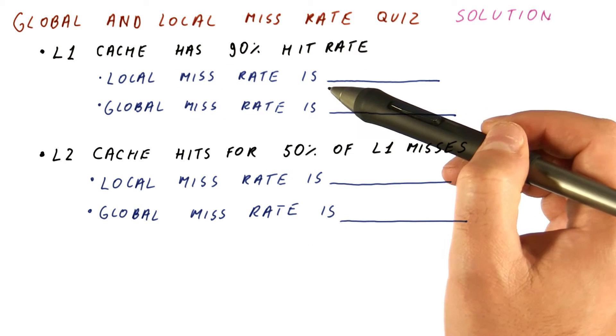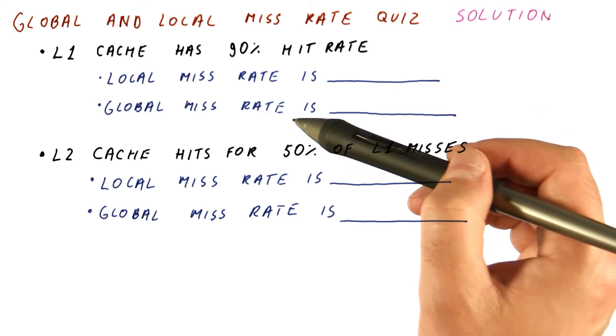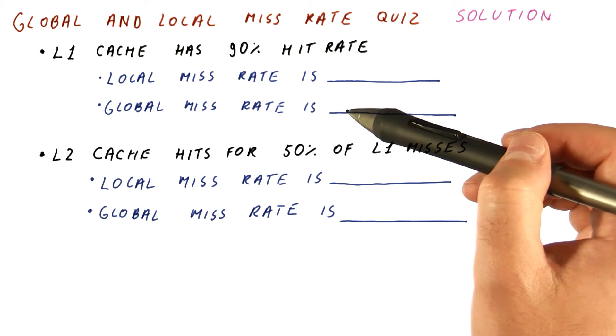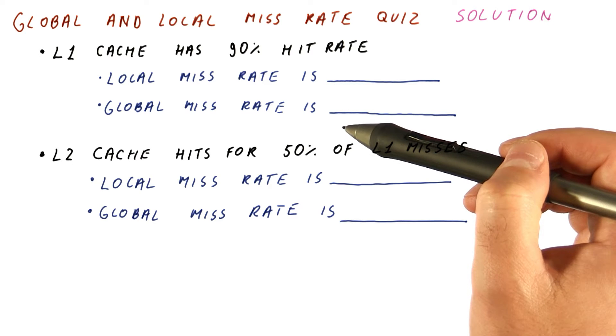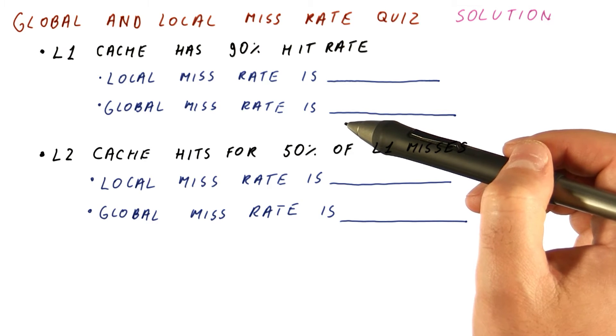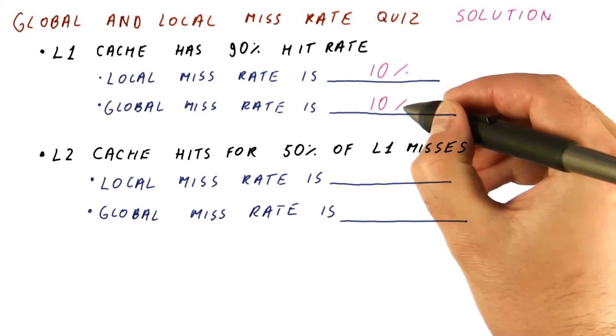Its local miss rate is the number of misses divided by the number of accesses to this cache. Its global miss rate is the number of misses divided by all the accesses that the processor makes, but because all these accesses go to this cache, they're the same, and they're both 10%.